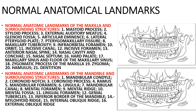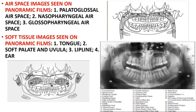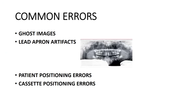A double-sided lead apron is usually recommended for panoramic radiography. Normal anatomical landmarks visible on the OPG include various structures of the maxilla and mandible. Air spaces imaged include palatoglossal, nasopharyngeal, and glossopharyngeal airspaces. Soft tissue images visible include the tongue, soft palate, uvula, lip line, and ear.